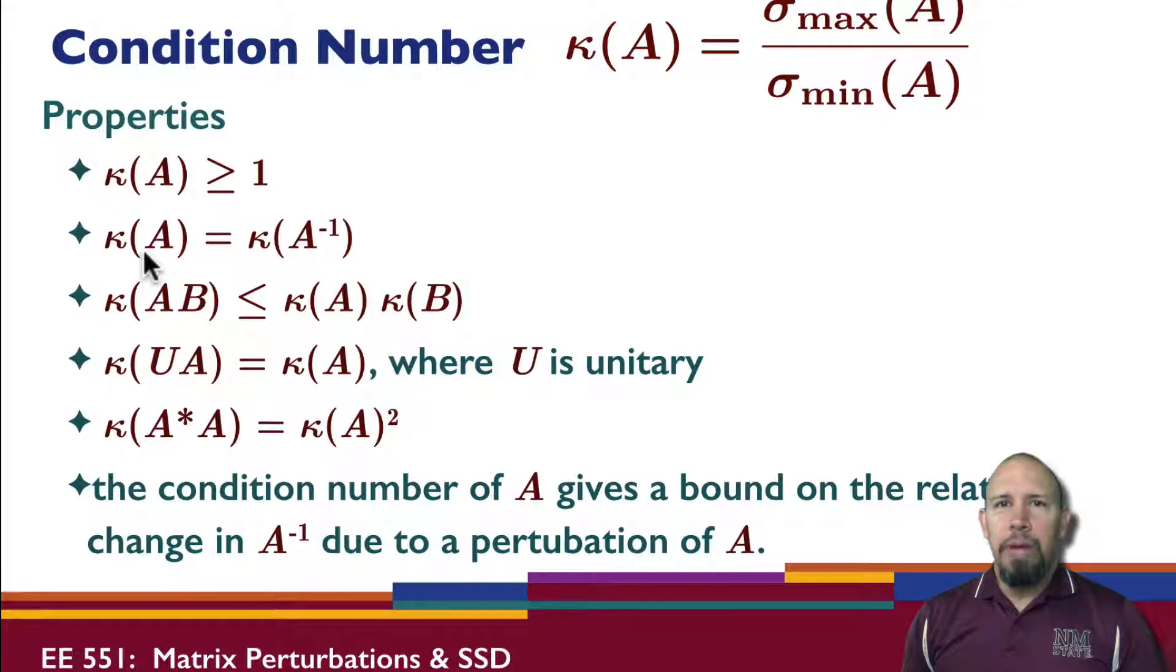The condition number of the matrix is equal to the condition number of the inverse, if the inverse exists. The condition number of a product is less than or equal to the product of the condition numbers. If we multiply the matrix by a unitary matrix, we preserve the condition numbers.